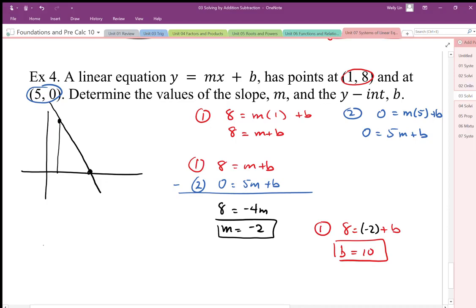where we made the system, the relationship between m and b came up with two equations that related m and b together and then solved it as a system by eliminating one of the variables. So my equation then works out to be y equals negative 2x plus 10.